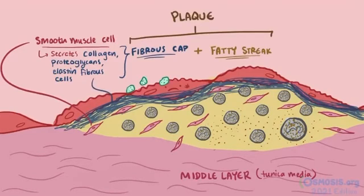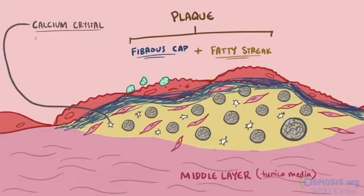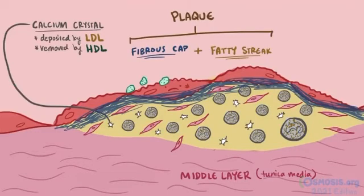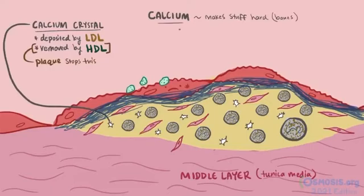The presence of fatty streaks causes the underlying smooth muscle in the blood vessel wall to also start depositing calcium into the plaque, creating crystals. Normally calcium is deposited into the vessel wall by low density lipoproteins and is then removed by high density lipoproteins. The accumulation of plaque messes up the ability of high density lipoproteins to remove calcium from the vessel, so a buildup of calcium occurs and it crystallizes. Calcium makes stuff hard — which is why your bones are full of calcium — and this deposit of calcium into the plaque is what stiffens the walls of the arteries.